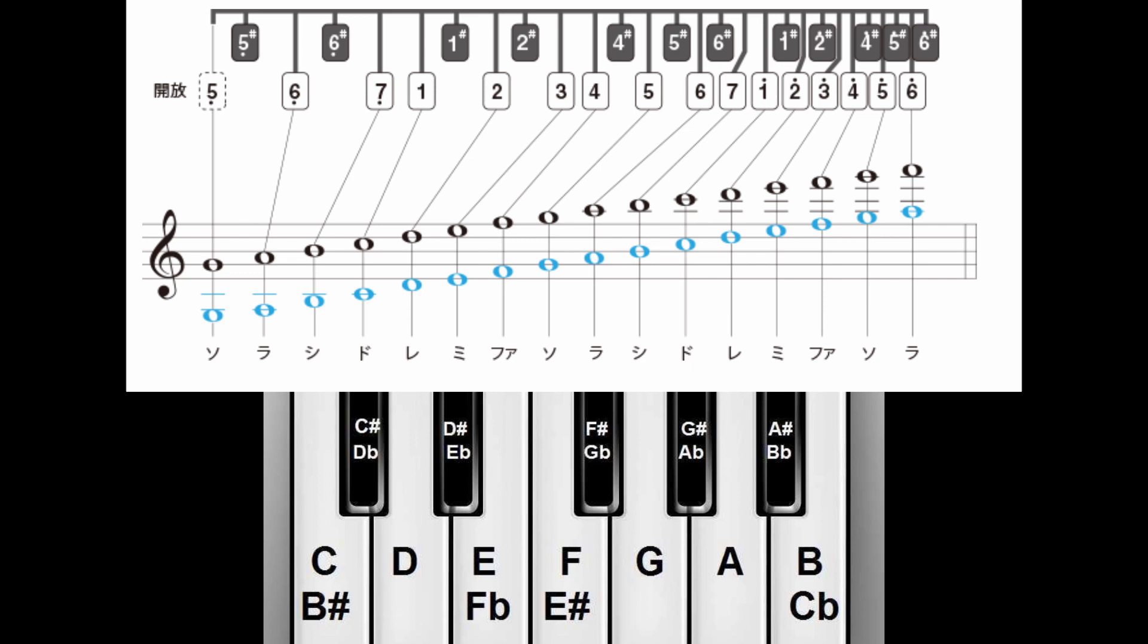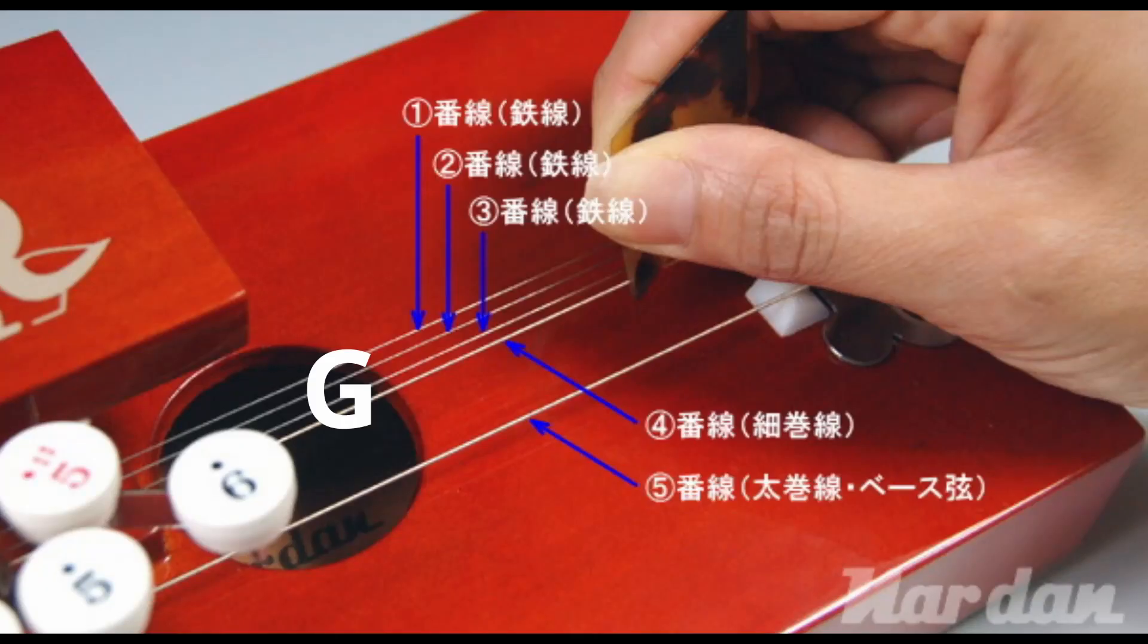Again, assuming we were in C standard tuning where 1 is the C, we would have 6A7B1C. Going one note back from this, aka open string, it means that the open string will be tuned to G. This in turn means that if we want to tune to C standard tuning, we're going to tune those top 4 strings to G.